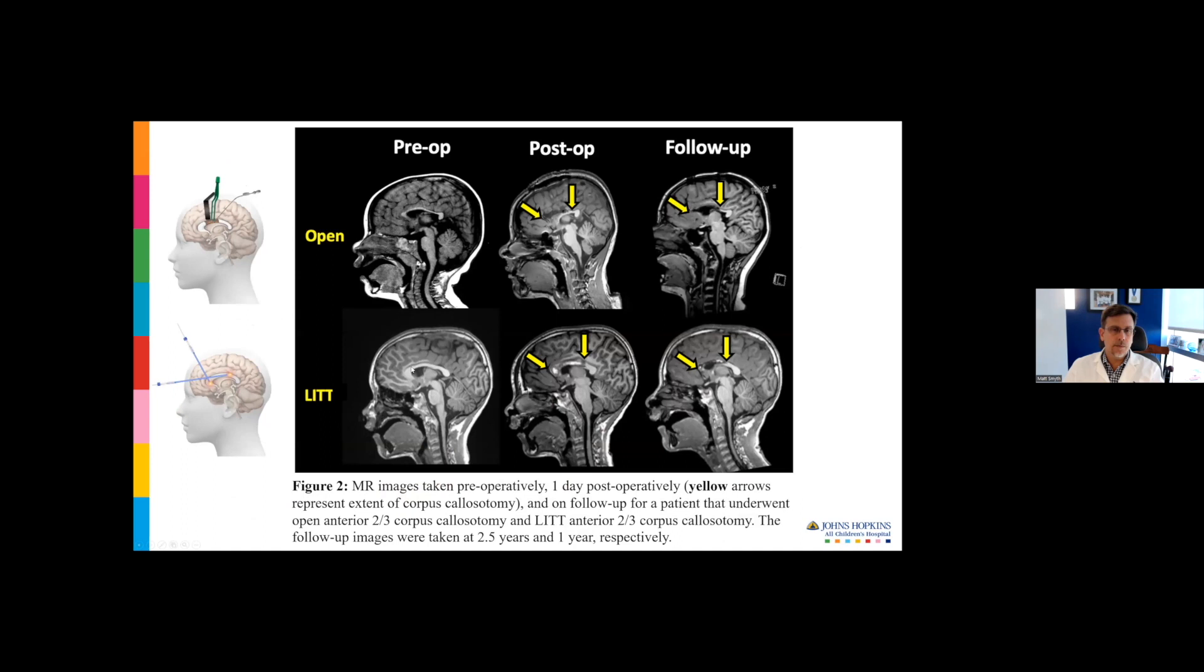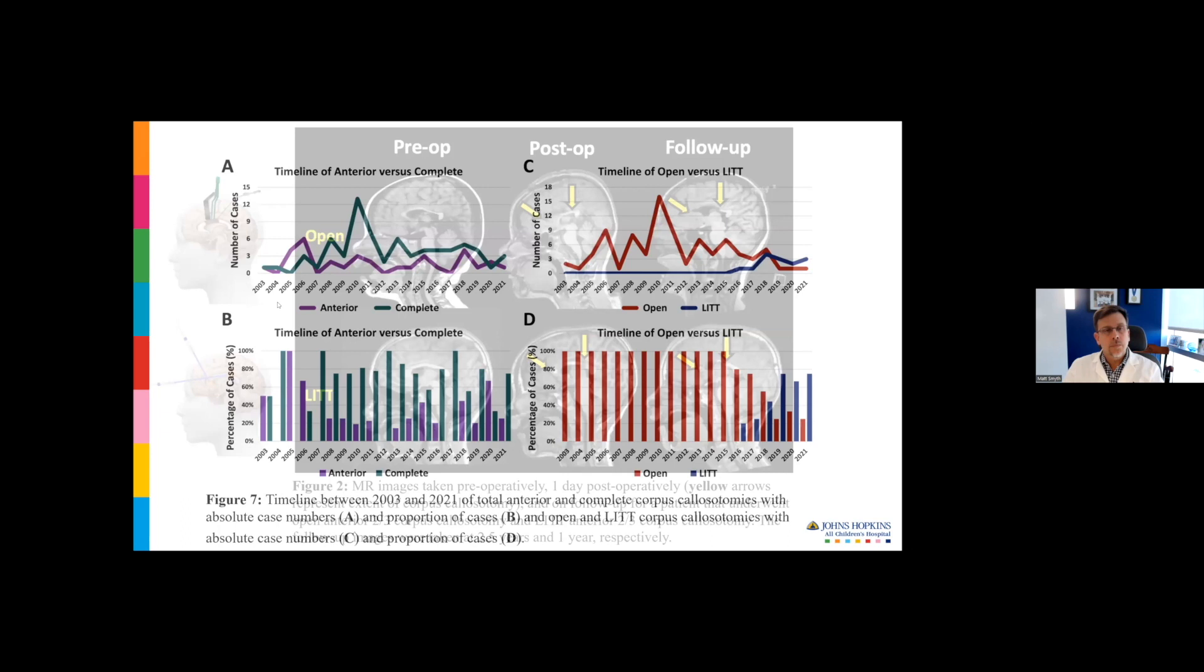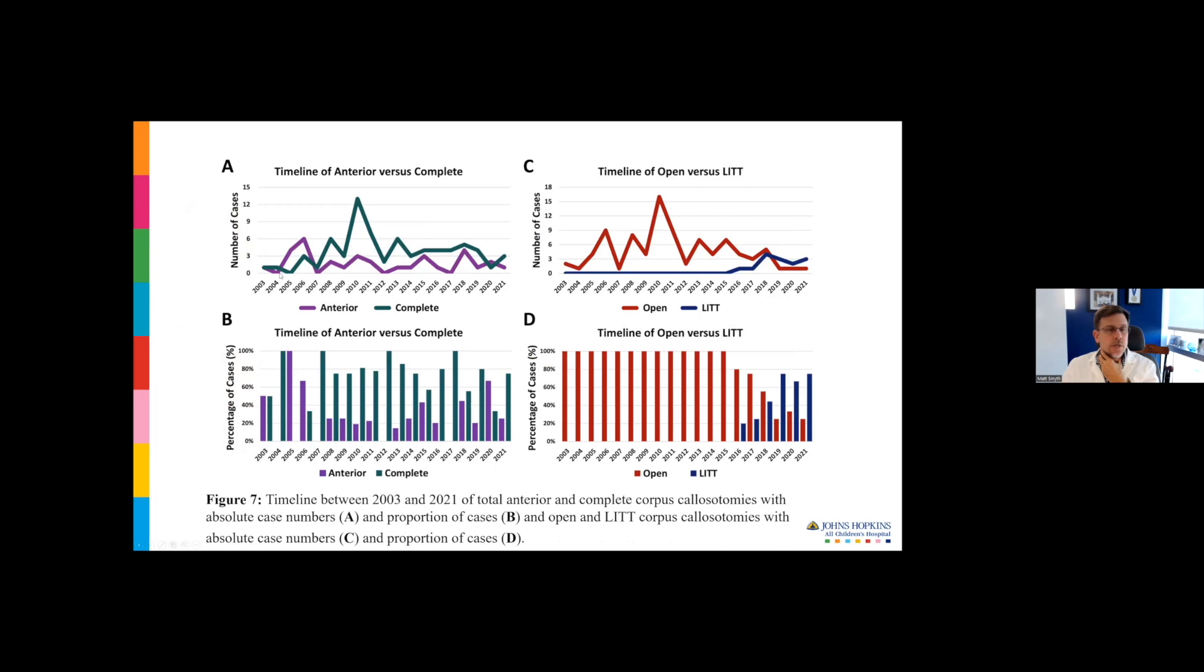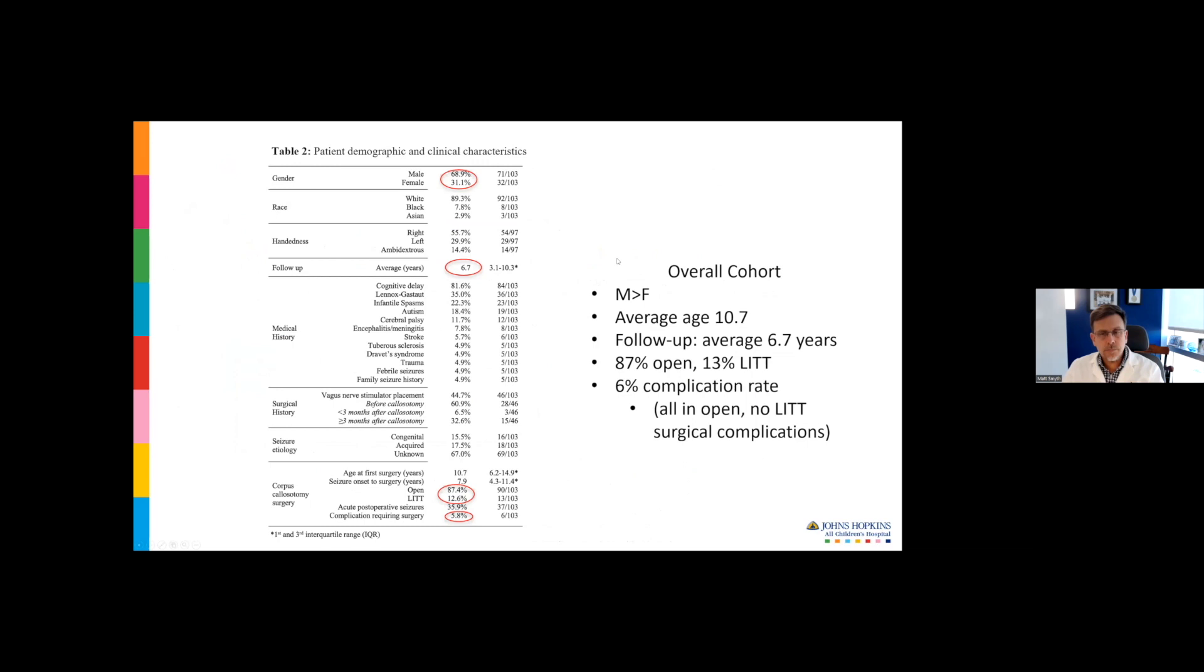Here's a typical open pre, immediately post-op, and delayed follow-up MRI scan. And here's what lit looks like. This is just a timeline showing the adoption of different techniques over 20 years. Purple is anterior. You can see we started doing more completes after that first paper showed improved efficacy. The blue line is the incorporation of laser ablation into our practice. You can see it started to replace open callosotomy as we gained experience with it. In the total cohort, there was more boys than girls, average age about 10, follow-up about seven years. About 13% were lit.